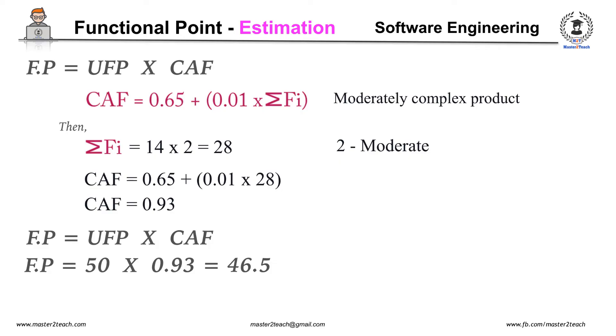Based on the projected functional point values derived from the requirements model, the project team can estimate the overall implemented size of the SafeHome user interaction function. Assume that past data indicates that one functional point translates into 60 lines of code and that 12 functional points are produced for each person-month of effort. This historical data provides the project manager with important planning information that is based on the requirements model rather than preliminary estimates.